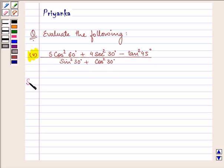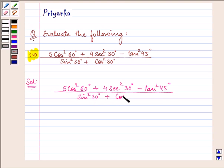Now let's proceed with the solution. Let us rewrite. We have 5 cos square 60 degree plus 4 secant square 30 degrees minus tan square 45 degrees upon sin square 30 degrees plus cos square 30 degrees.